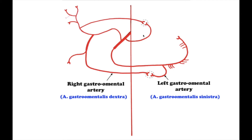Around the stomach, the four main arteries form an arterial ring, which consists of two arches: one situated on the lesser curvature, formed by the left and right gastric arteries, and one on the greater curvature, formed by the left and right gastroepiploic arteries.